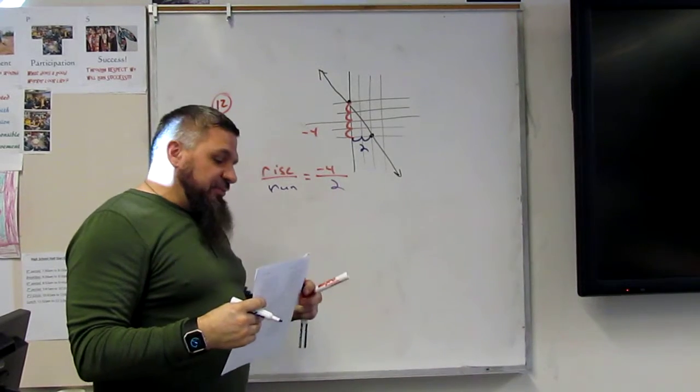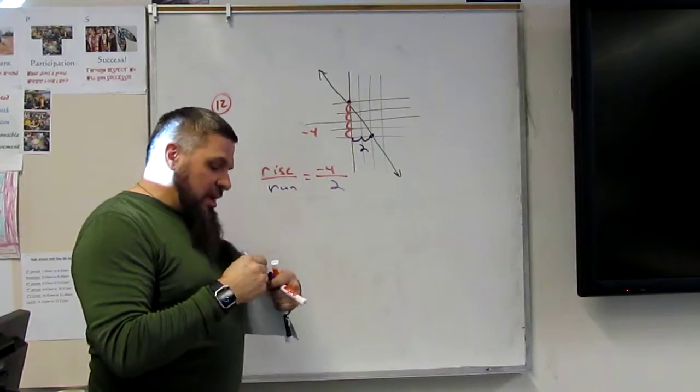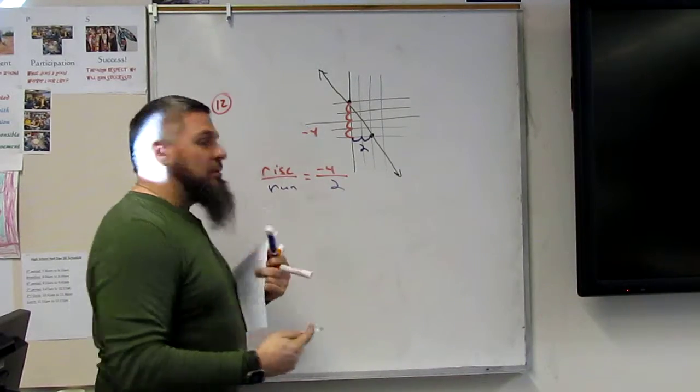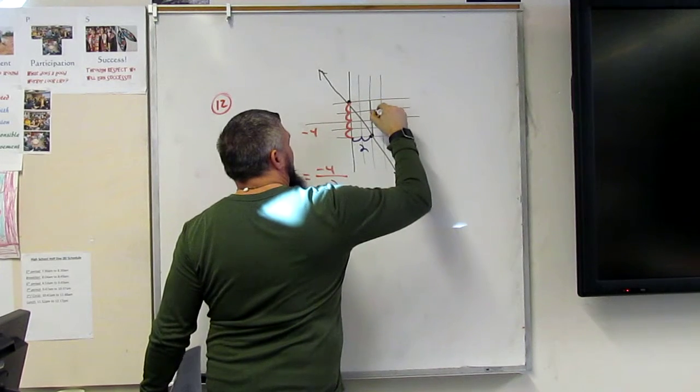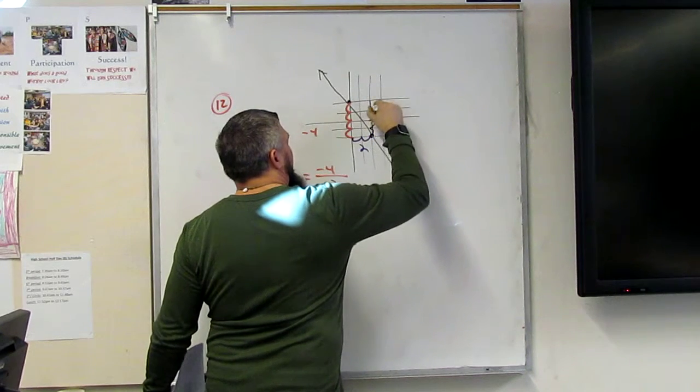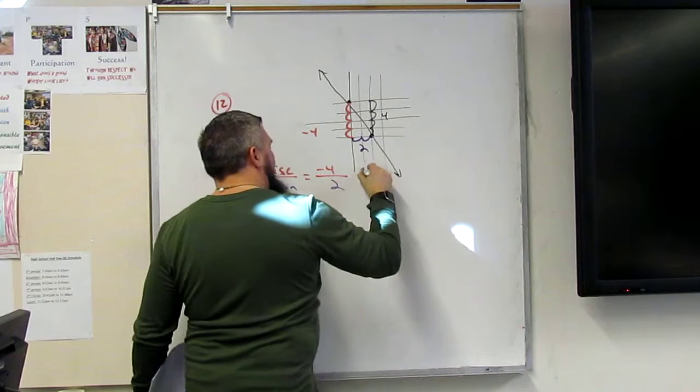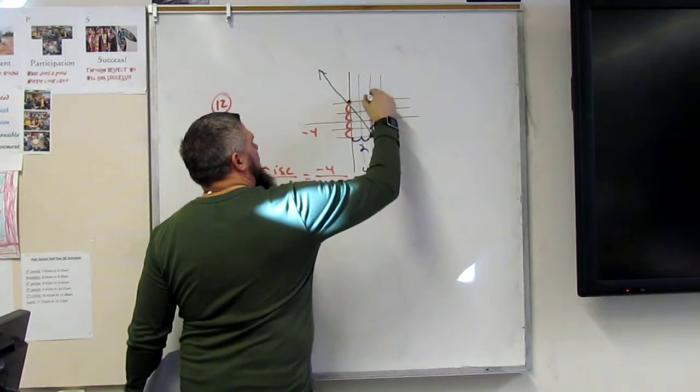Could I have done it in a different direction? Yeah. Okay, what would it be? The other way. Okay, so this would be positive 4? Yeah. So 1, 2, 3, 4. So that would be 4 over what? 2. Negative 2.